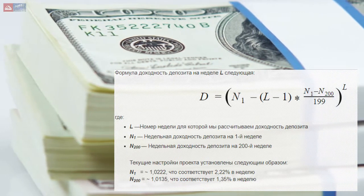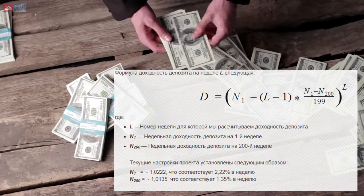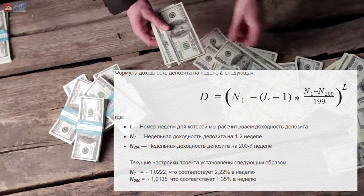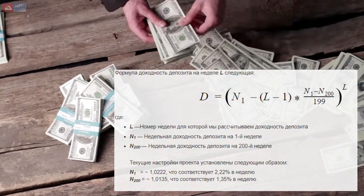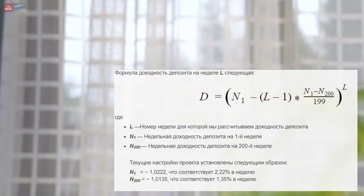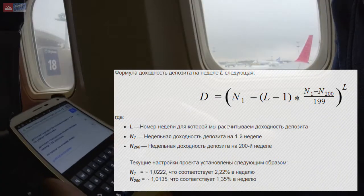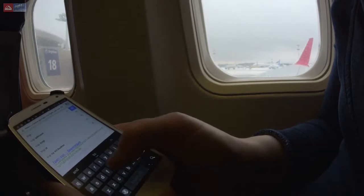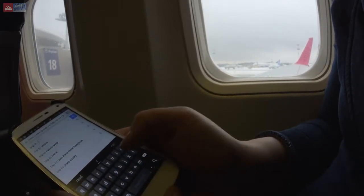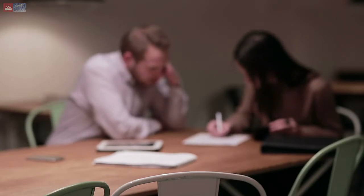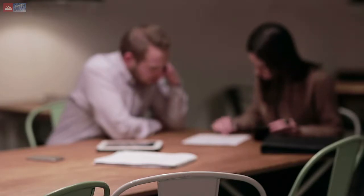Текущие настройки проекта: N1 = 1,222 (что соответствует 2,22% в неделю), N200 = 1,135 (что соответствует 1,35% в неделю). Эти настройки периодически меняются вместе с регулярным понижением доходности проекта, поэтому следите за новостями. Команда будет вовремя обновлять данные в этой статье.